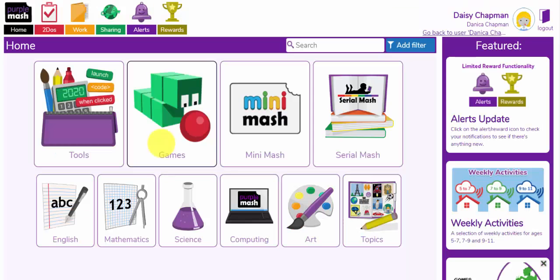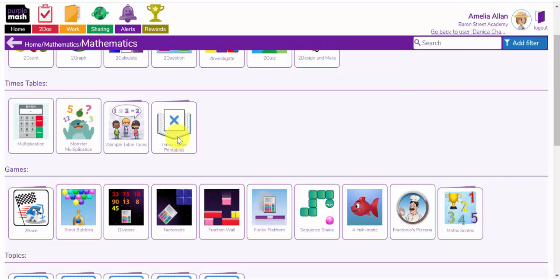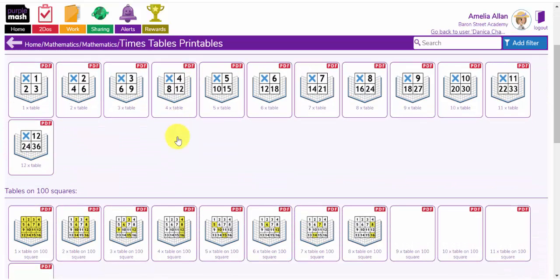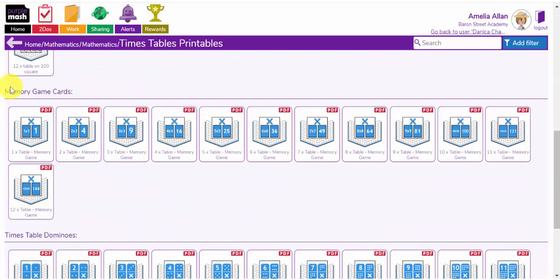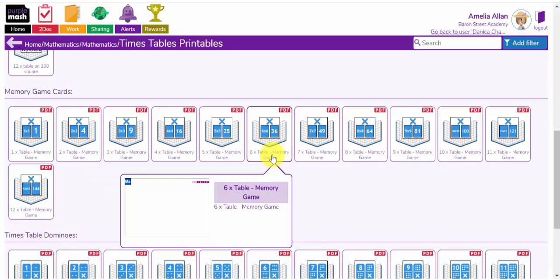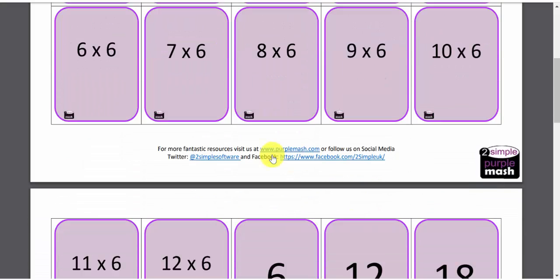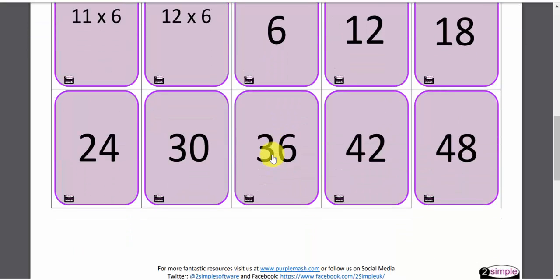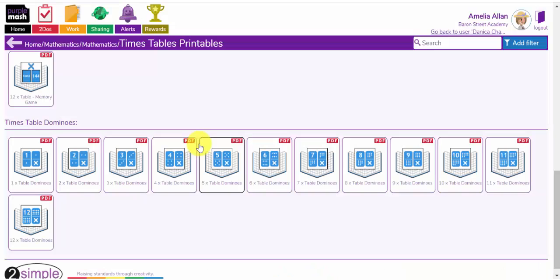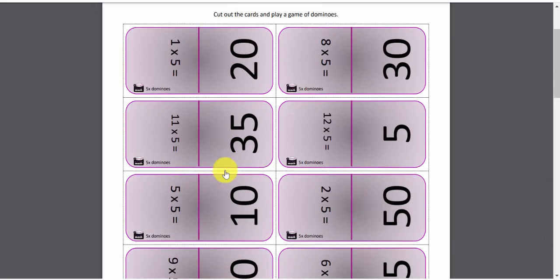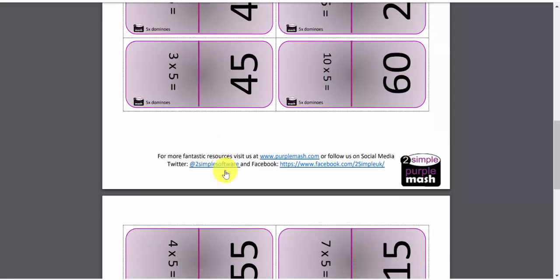Along with the maths games in the games area of Purple Mash, you also have this mathematics topic area. There are lots of printable resources here that you can print out if you have a printer at home. Some of these games, such as the memory games and the times table dominoes, are games that you could print off and play with your children. You could print off the six times table memory game, cut them out and see if you could match the times tables with the answers in a memory game format. The dominoes are just as fun. You can again print these out and cut them out and match them up with your children.